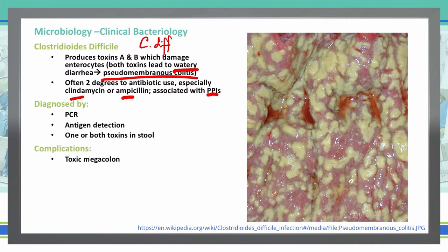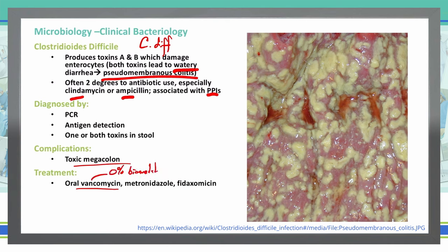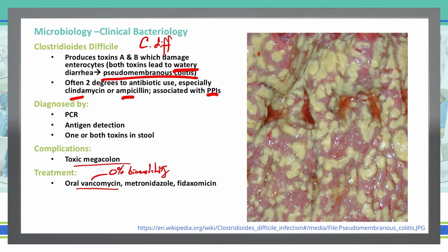Complications associated with a C. diff infection can include toxic megacolon. Treatment for this is going to be unique — specifically oral vancomycin. Something to note about oral vancomycin is that there is 0% bioavailability. So if you take vancomycin orally, there is 0% of that vancomycin absorbed into systemic circulation. Therefore, anything taken orally will just go through the intestinal tract and excrete out with a bowel movement.